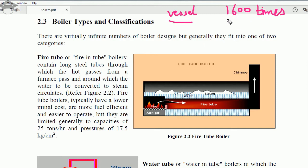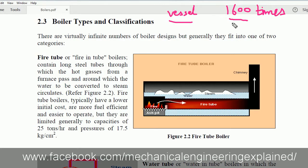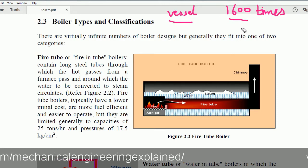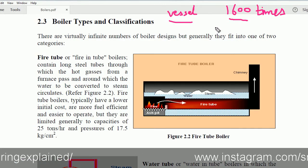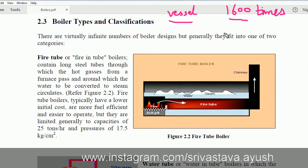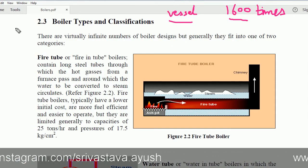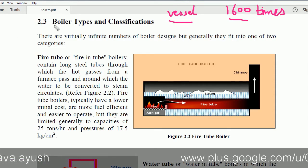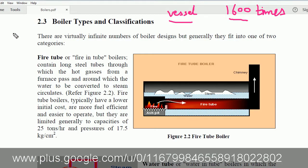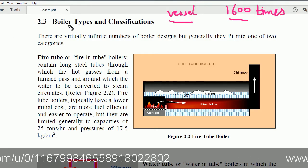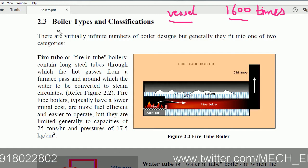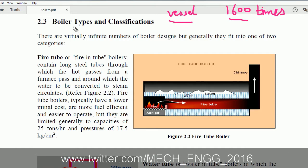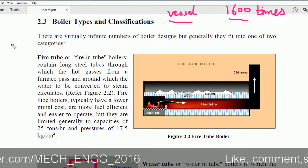In a boiler, the volume of the water increases to 1600 times as compared to steam. That means this volume of steam is 1600 times the volume of water that was taken initially. So boiler design is very crucial and we have very strict regulations throughout the globe regarding boiler design.